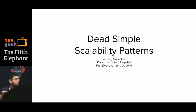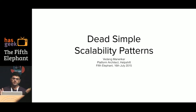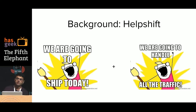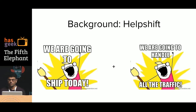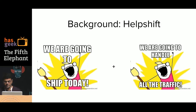My name is Vedang, I work as a platform architect at HelpShift. This is going to be a crisp talk on simple scalability patterns. HelpShift is a 3-year-old startup in the mobile CRM space. As a startup your greatest weapon is your agility — if you ship faster, that is how you compete with established companies. You have to balance these two requirements: you want to ship faster and you want your system to be resilient. Any structural and architectural processes you implement need to take care of both of these constraints. Today I want to talk about certain simple things you can do within these constraints.